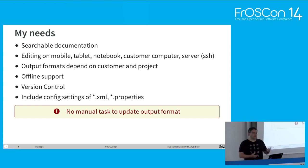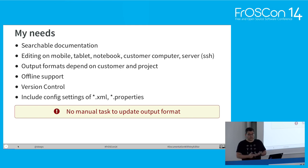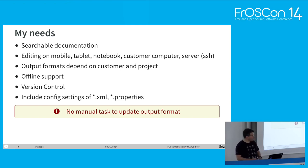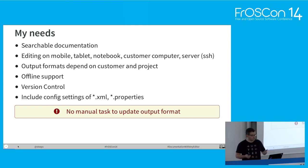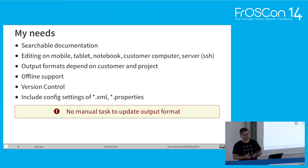The output formats normally depend on the customer or the project — sometimes office document formats like Word, sometimes PDF, mostly PDF. I like offline support because sometimes I have to document stuff which can break, and when the documentation is stored on that device which is broken, I can't access it. I love version control — I use Git for that — and I want to include XML and property files. The main part is I don't want to do something twice; I hate copy and paste from something into an office document, a wiki page, or the documentation.